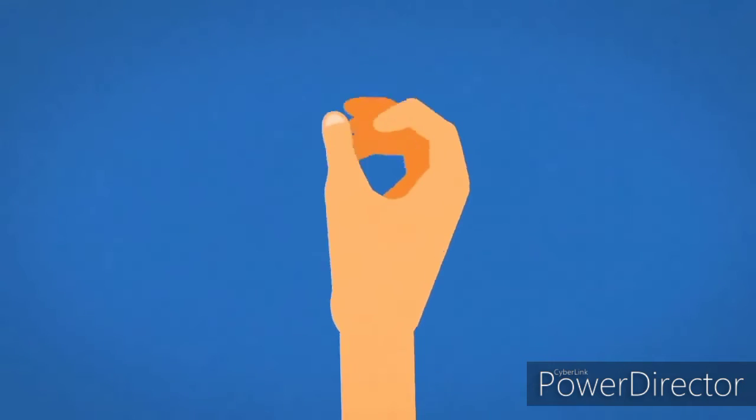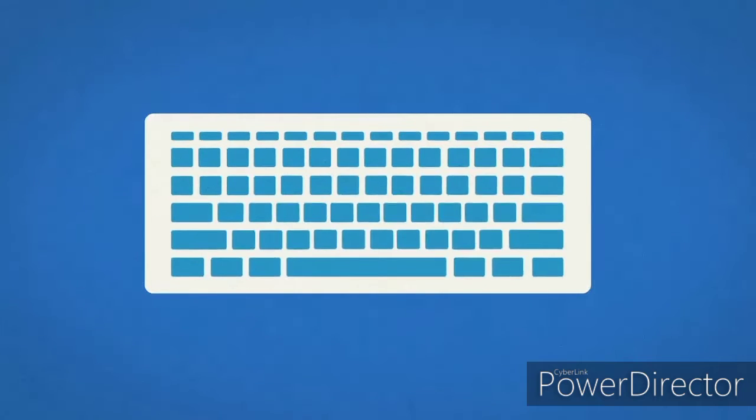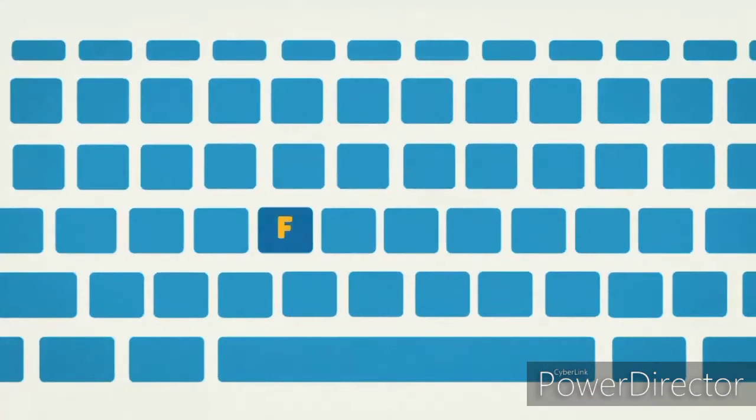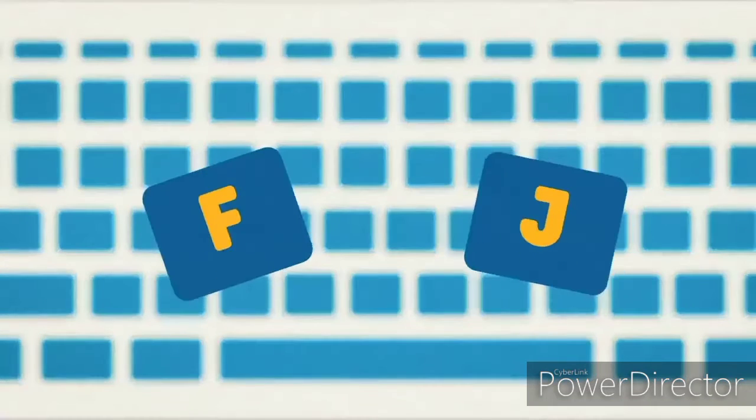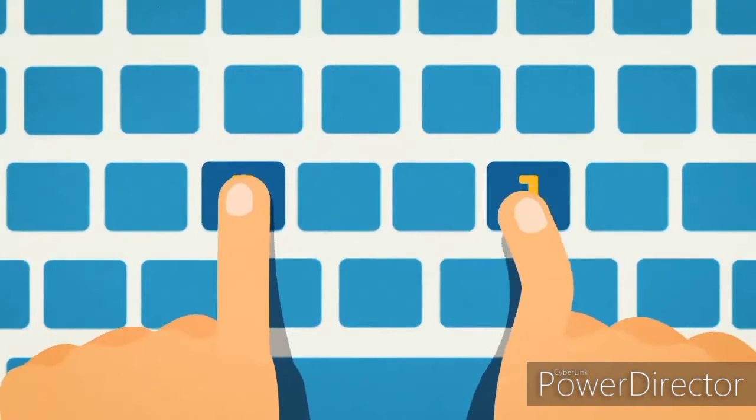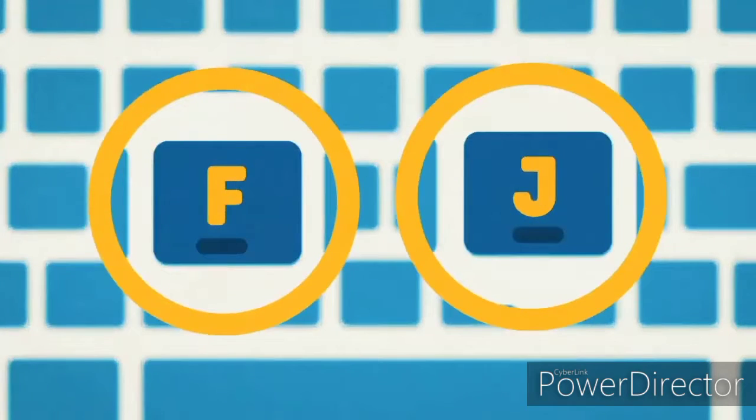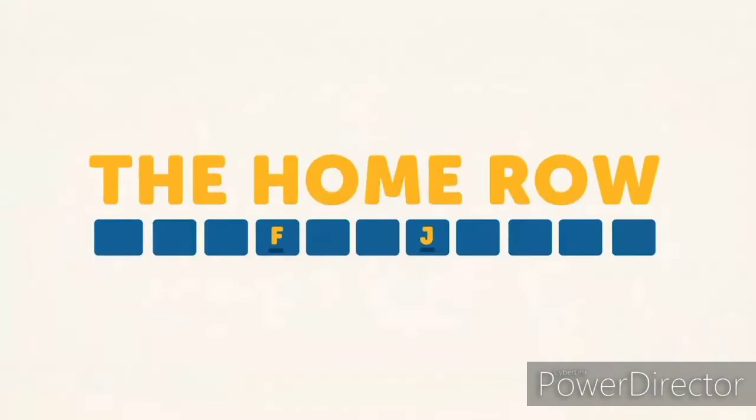Before we put our fingers to work, let's use our eyes for a moment. Take a look at your keyboard. Do you notice anything different about the F and J keys? They have bumps. Okay, now place your index finger on those keys and feel the bumps. Got it? Great! These bumps are designed to guide your fingers back to the home row.